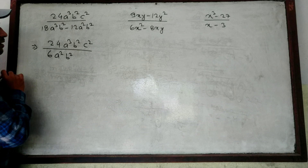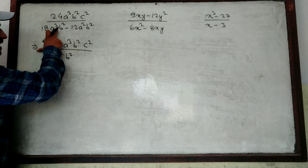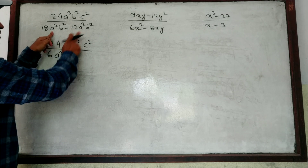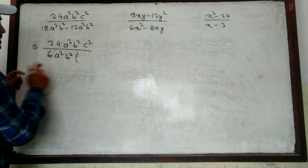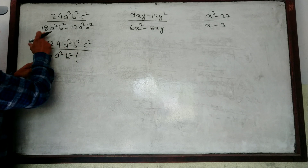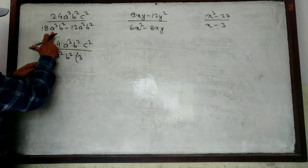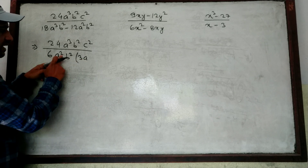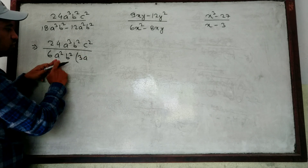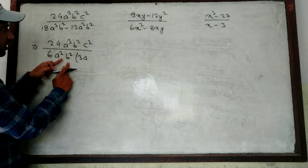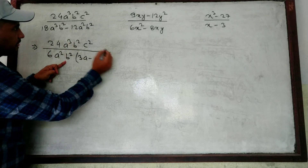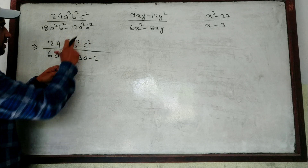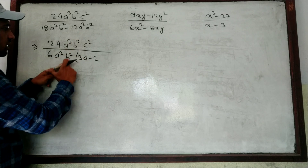For B²: both terms have B², so B² is common. When A³ and A² are compared, A² is smaller so A² is the common factor. What remains after factoring: 6 times 3 gives 18, and A³ divided by A² leaves A. B² is already common. Minus 12: 6 times 2 gives 12, and A² is already common, B² is already common. So denominator becomes 6A²B²(3A minus 2).